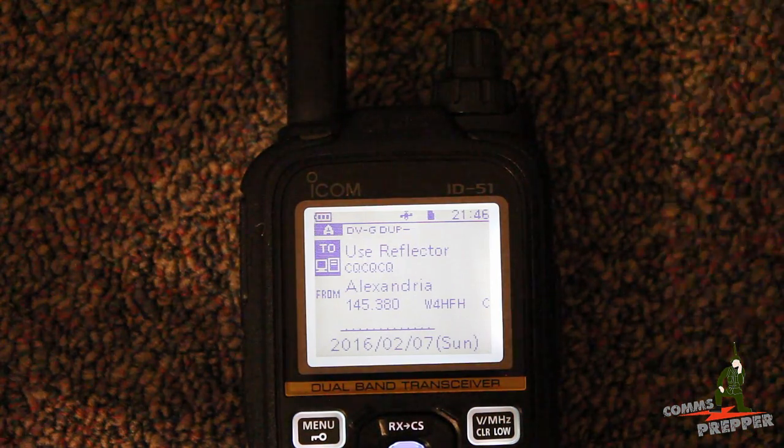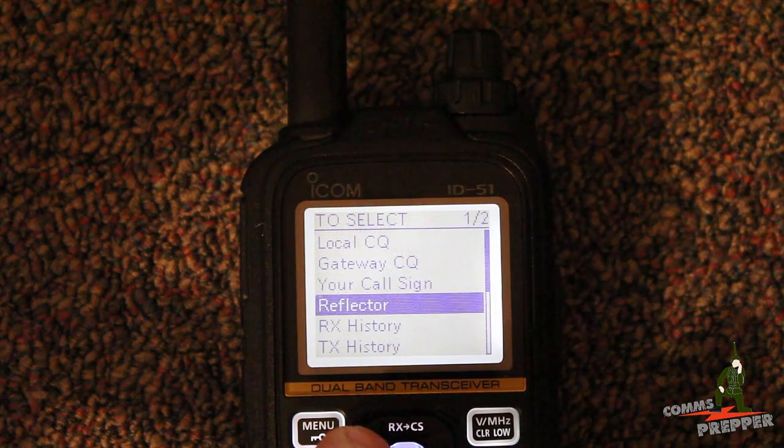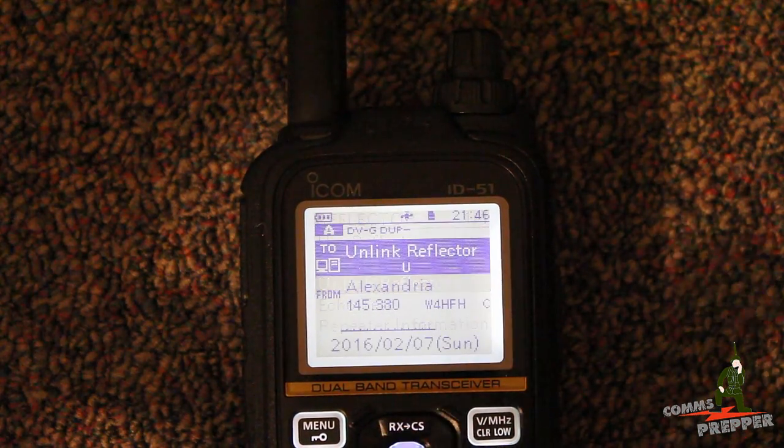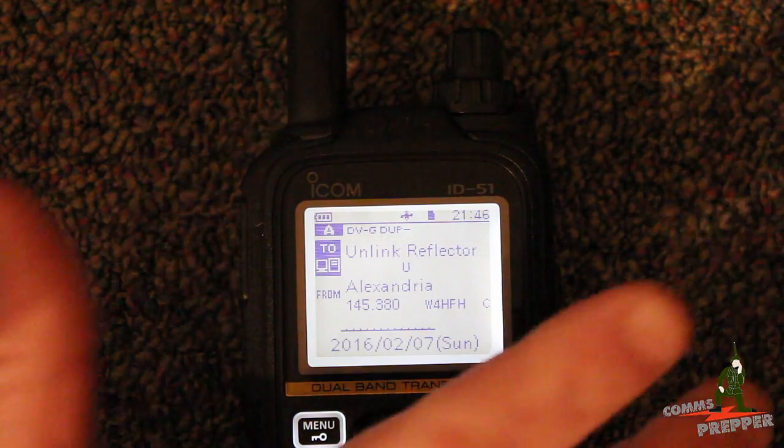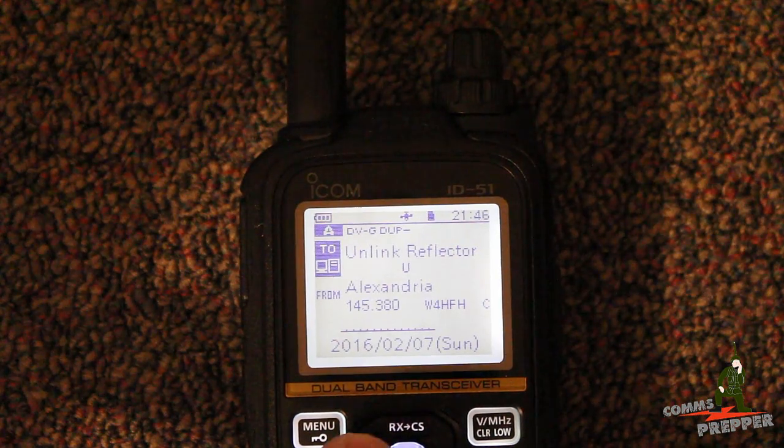We've talked for five, ten minutes, do what we got to do. Now we're done. So as a matter of courtesy, we're going to come in here to reflector, hit the unlink button. It puts a U in the eighth position we would transmit into the system. Then you can just return to your repeater mode.